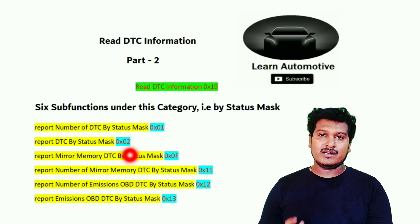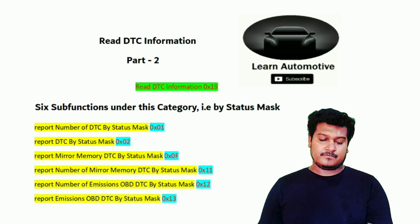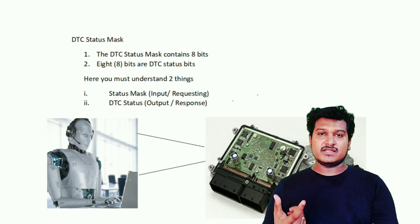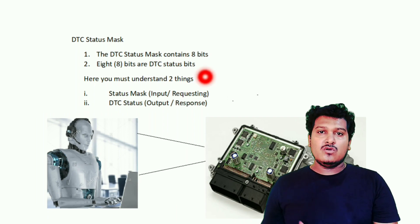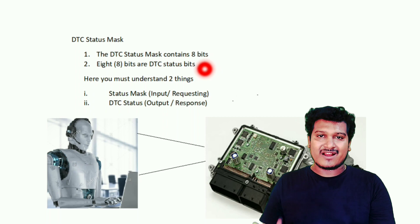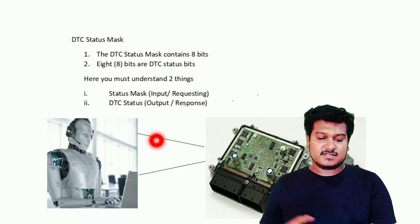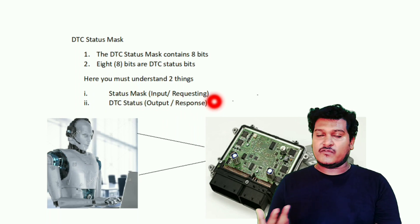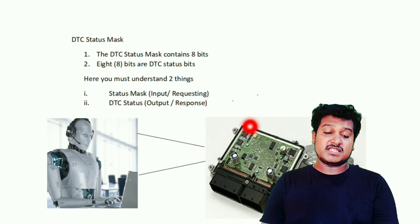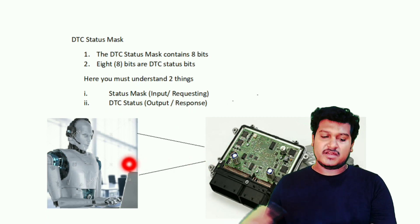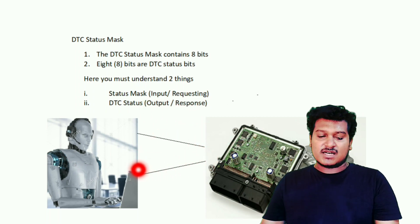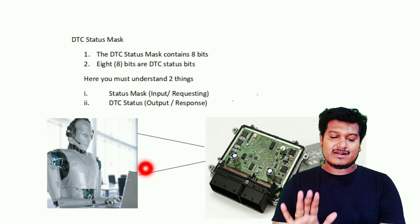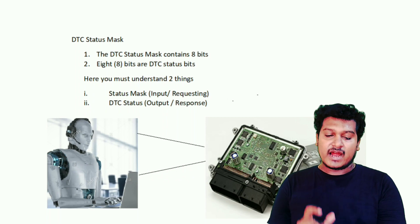The DTC status mask contains eight bits. Whenever we want to know about the status of a DTC, we request using the DTC status mask. You must understand two things: the status mask is the input — we are requesting using the status mask — and the DTC status is the output, which is the response from the ECU.